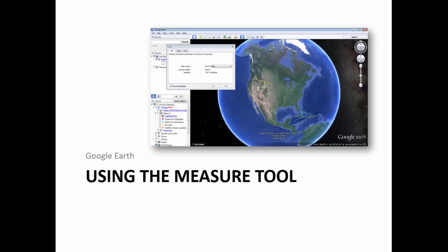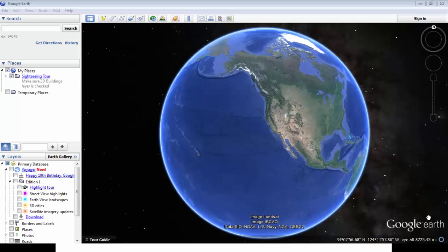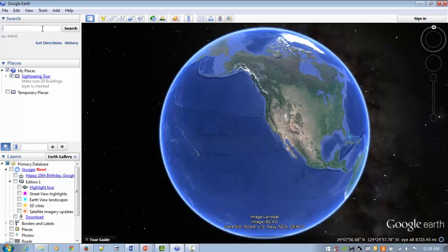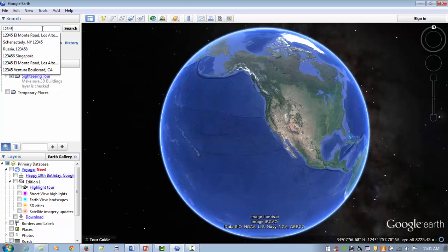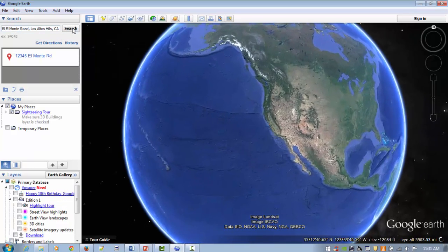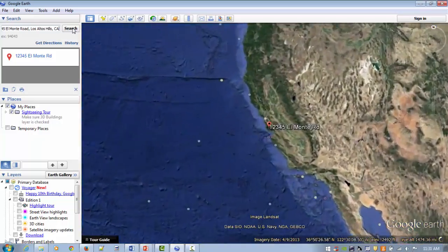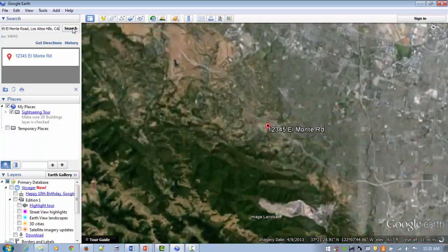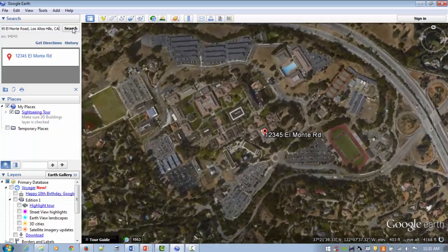First, to use the ruler tool, let's open Google Earth. Okay, here we are in Google Earth. So, to start out with, let's look at the measure tool. I'm going to go over and type in the Foothill College address, 12345 El Monte Road, Los Altos Hills, California, and zoom in. I always get a little dizzy watching that. And, here we are at the Foothill College campus.